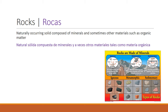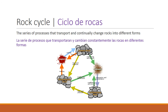The rock cycle is a series of processes that transport and continually change rocks into different forms. Rocks change through processes including melting, cooling, heat, pressure, weathering, erosion, or being compacted and cemented together.